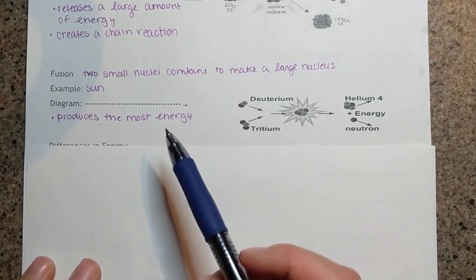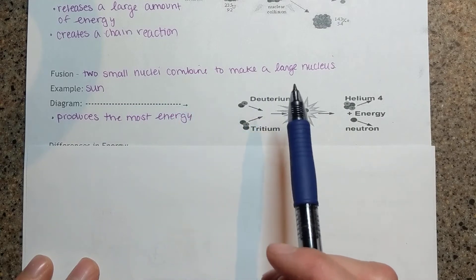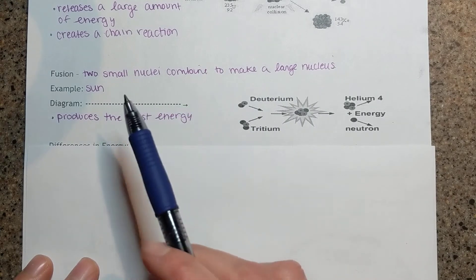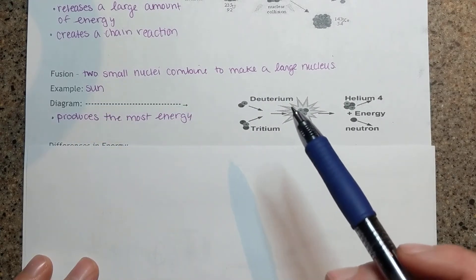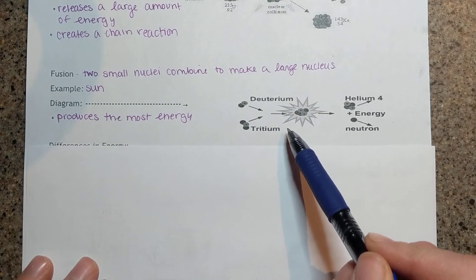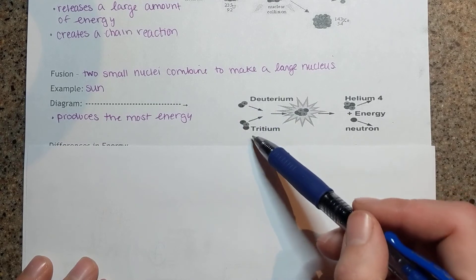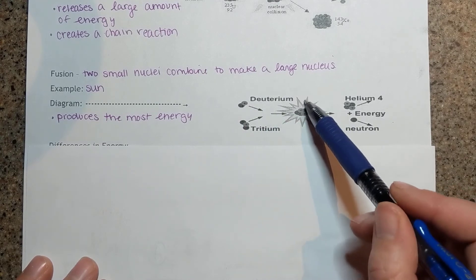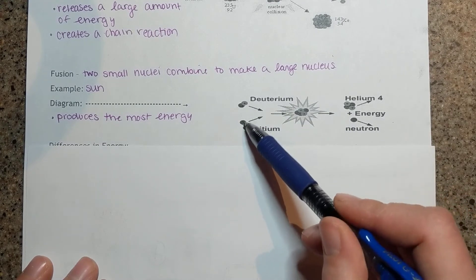Fusion is where two small nuclei combine to make a large nucleus. This occurs in the sun. In the sun we have deuterium and tritium which are different types of nuclei that are going to combine together.